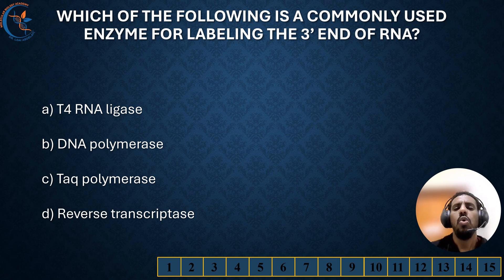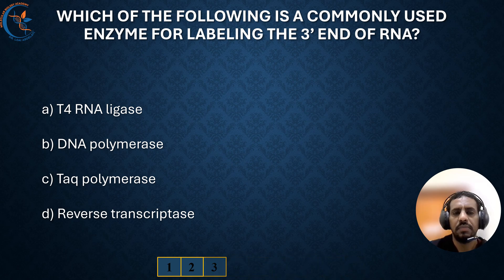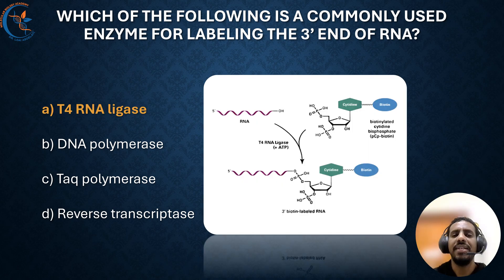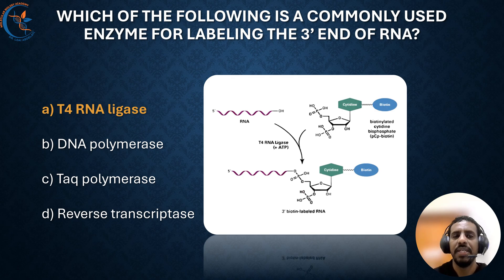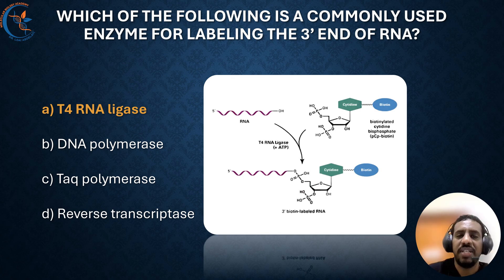Which of the following is the commonly used enzyme for labeling the 3' end of RNA? The correct answer is T4 RNA ligase. T4 RNA ligase is an enzyme used to attach a labeled nucleotide to the 3' end of RNA molecules. This is an important step in RNA research because it helps in labeling RNA for further analysis, such as in sequencing or detecting specific RNA sequences. The ligase acts like a molecular glue that bonds the nucleotide to the RNA, allowing researchers to track or study RNA molecules more effectively.